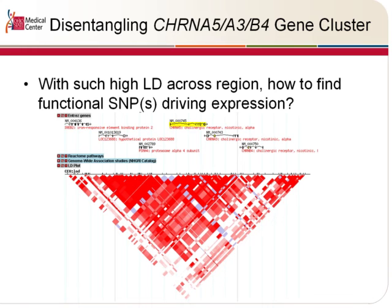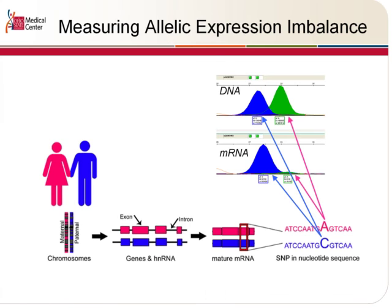We do this by measuring allelic expression imbalance. I'm going to take you through this in probably excruciating detail, but it's really important to understand why we came to the conclusions that we came to. Every individual inherits two copies of each autosomal gene, one from their mother, one from their father, and each of these genes are going to be expressing their own mature mRNA products. Now, if there's a SNP in the mRNA and it's heterozygous at that SNP location, we're able to exploit that region to determine the amount of expression from each allele.